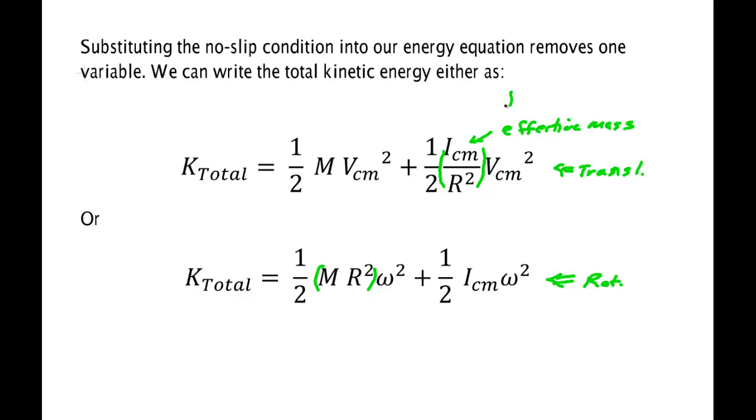All of the moment of inertias look like some gamma times m r squared. So when you divide by r squared, you're basically getting this gamma times this mass. For a cylinder, it's a half of the mass.